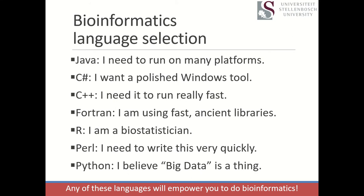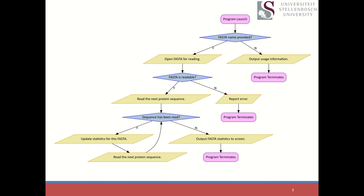Welcome back to part two of Python programming. I'd like to remind everybody about the overall project we're trying to hit with our six-part series. We want to be able to read a FASTA file, and from that FASTA file we want to come up with two different kinds of measurements: how many sequence entries are there, and how many times is each amino acid used.